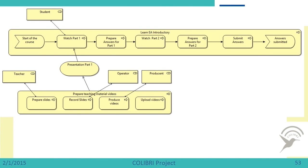Now try to construct this picture. We are adding some elements to the business process we have already drawn. We are noting that the one who watches the video is a student. There is a service — presentation of part one — which is made by another process performed by a teacher, operator, and producer of these videos. This is one process which provides a service for the student so that the student can watch the video. Try to represent this in the tool, and when it is done, proceed further.